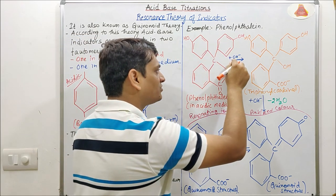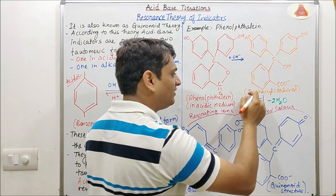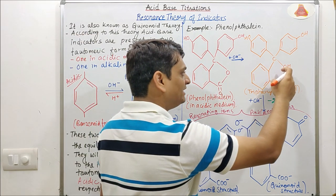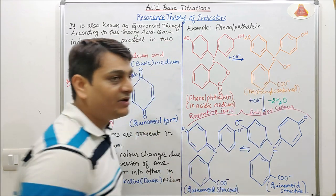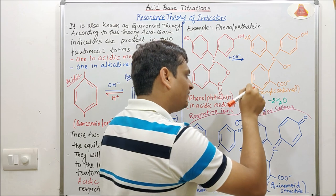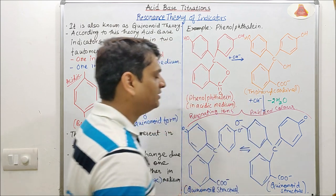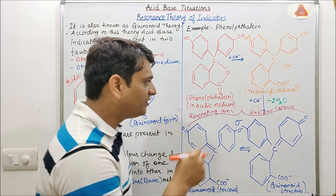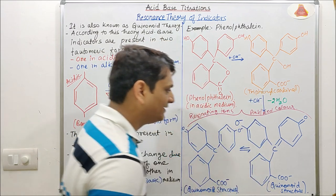When it is exposed to OH⁻ or alkaline medium, it will be converted into the form of triphenylcarbinol. The OH⁻ will be attached here, the negative ion will be transferred, and this five-membered ring will be broken down. If we add further alkaline medium or OH⁻, then it will give two molecules of H₂O and finally this triphenylcarbinol will be converted into the quinoid structure.